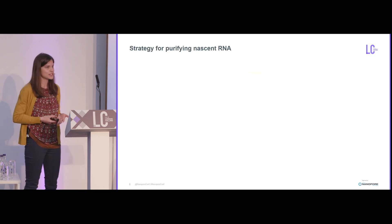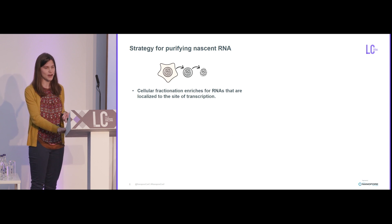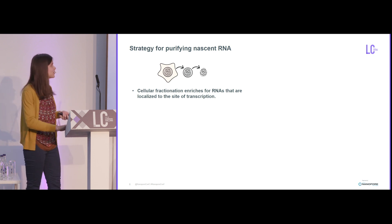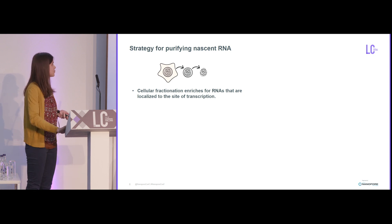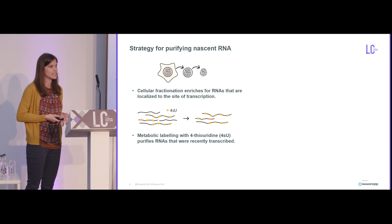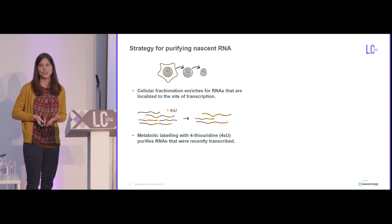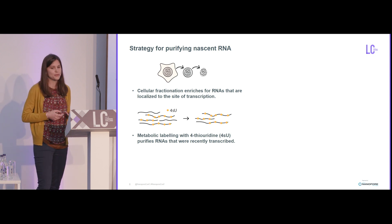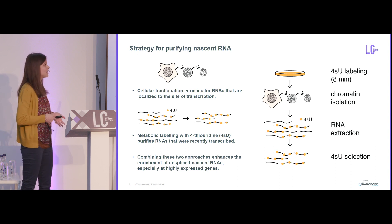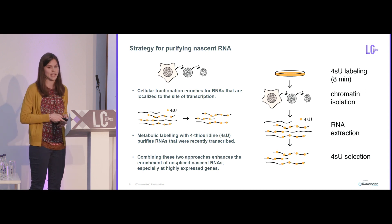To do this, I have to purify nascent RNA. One strategy is through cellular fractionation, which enriches for RNAs localized to the site of transcription. This works through a series of centrifugation steps and lysis to purify chromatin-associated RNA. Another strategy is metabolic labeling, where 4SU — a uridine analog — gets incorporated into RNA as it's made, and through biotinylation and streptavidin pulldown, you can purify recently transcribed RNAs. I found that combining these two strategies is much better than each on their own, enriching for the benefits of both and minimizing background. So I decided to combine them to purify the nascent RNA.